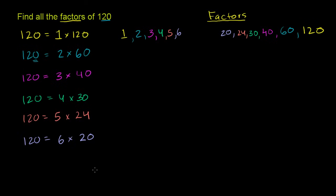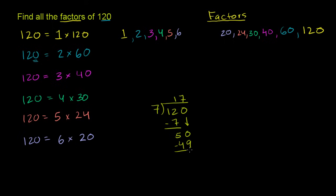Now let's think about 7. To test it, let's just divide 7 into 120. 7 goes into 12 one time, 1 times 7 is 7, subtract — 12 minus 7 is 5, bring down the 0. 7 goes into 50 seven times, 7 times 7 is 49, subtract — you have a remainder. So 7 does not divide evenly into 120.